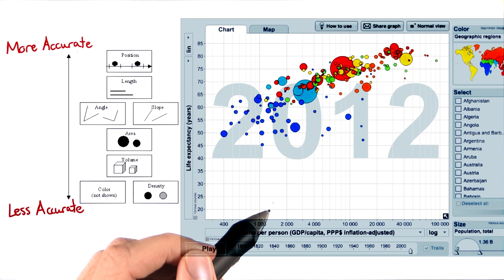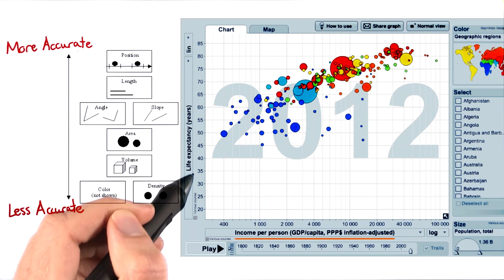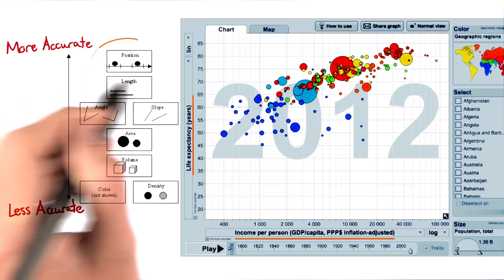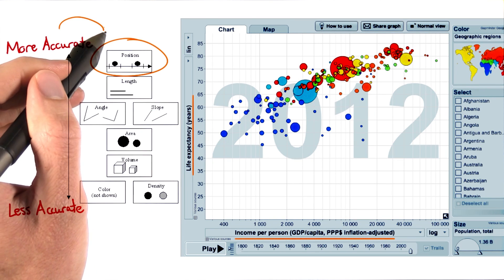For the GapMinder visualization, this is why the most important variables, income per person and life expectancy, were encoded using position. It's the most accurate of the bunch.